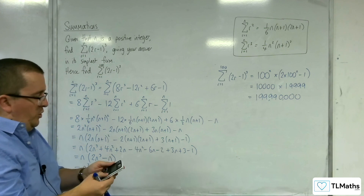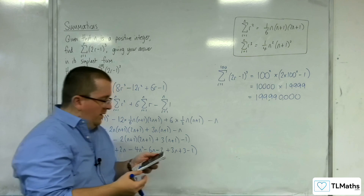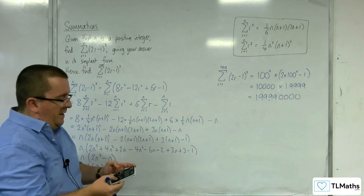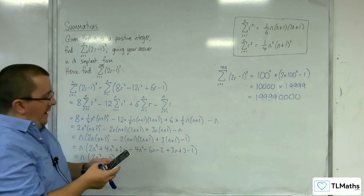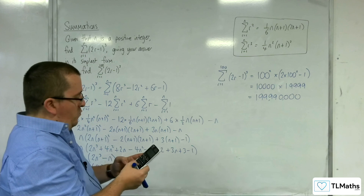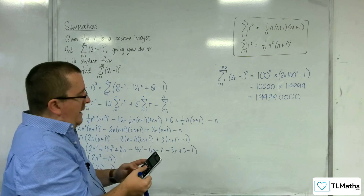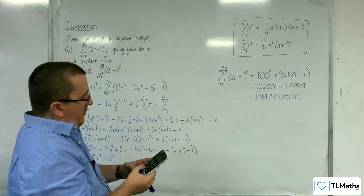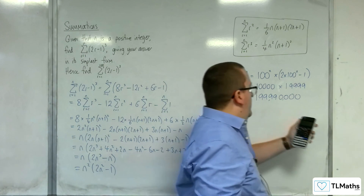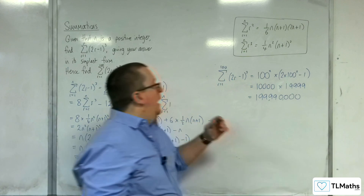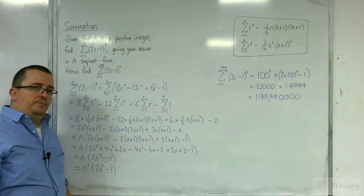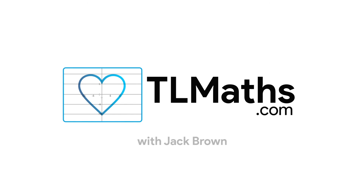Let's double check that using the summation function on the calculator — shift then the x button — and type in (2x minus 1) cubed from x equals 1 to 100. We get the same answer, which double checks not just the numerical result but also that our formula was correct.